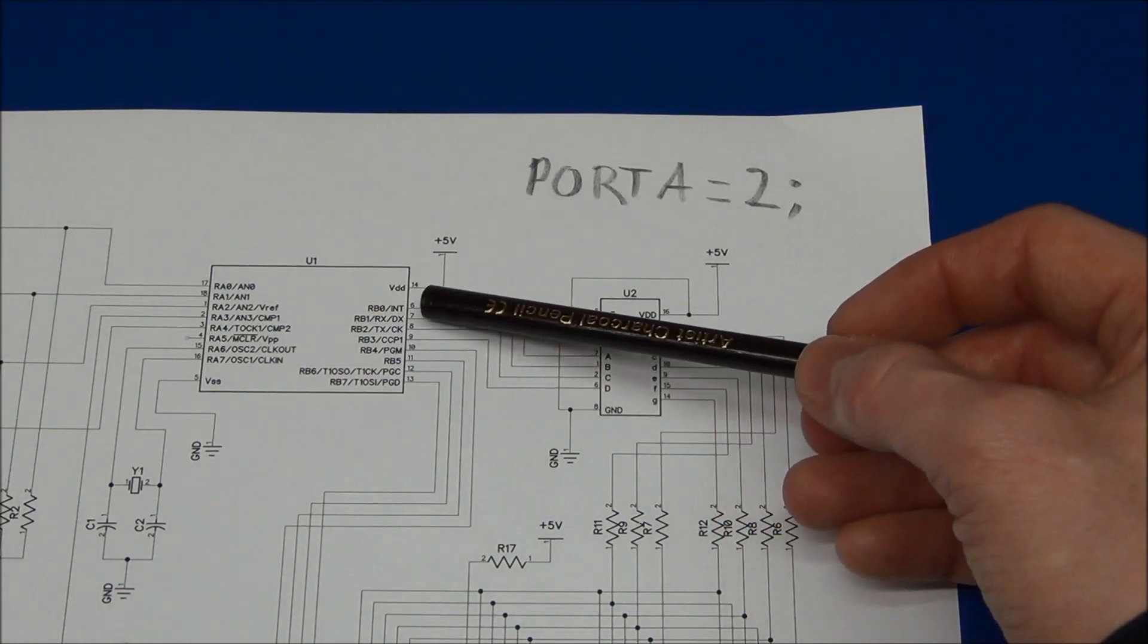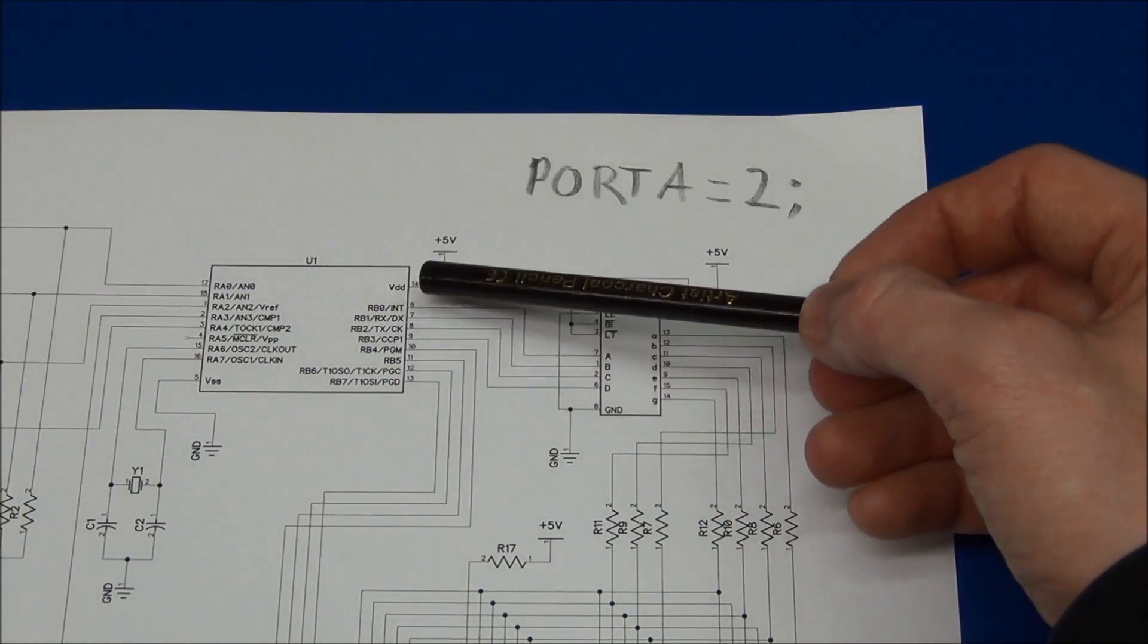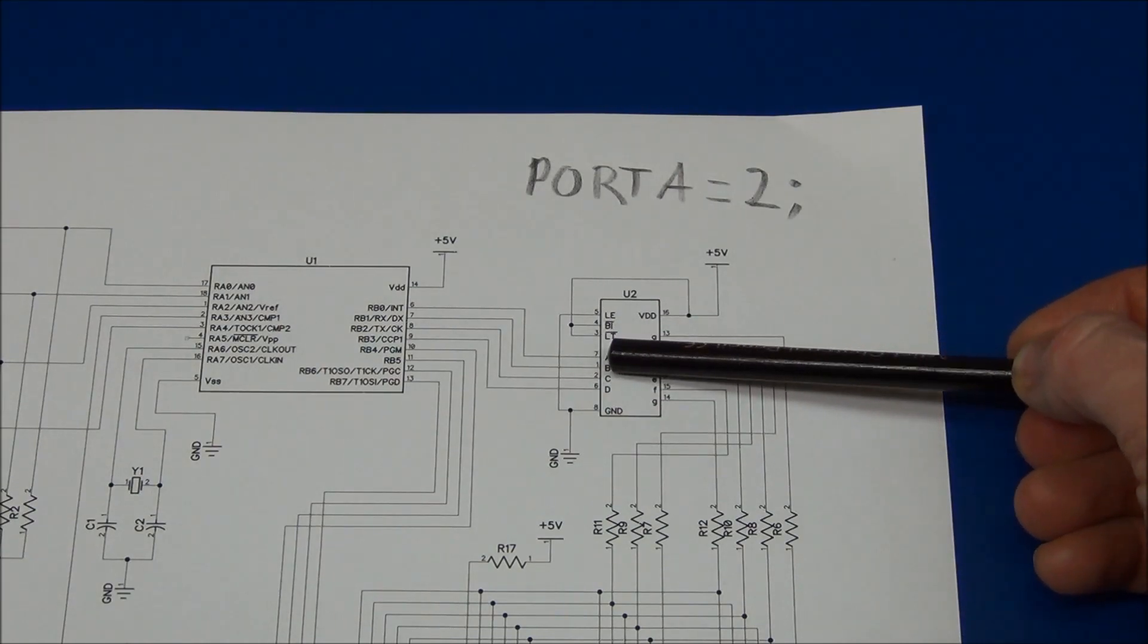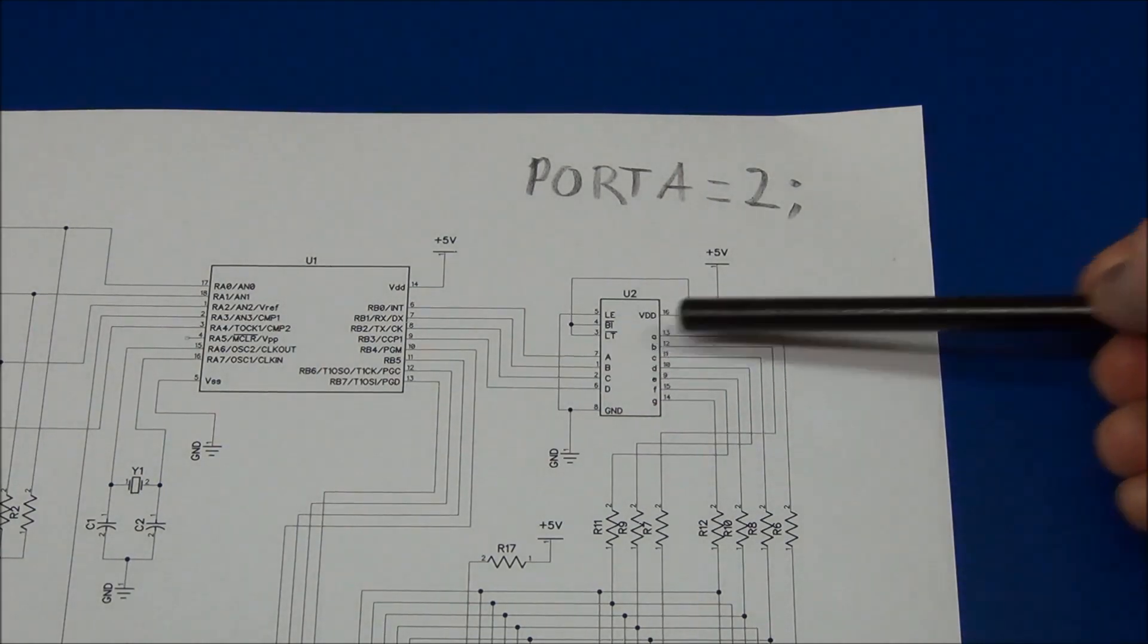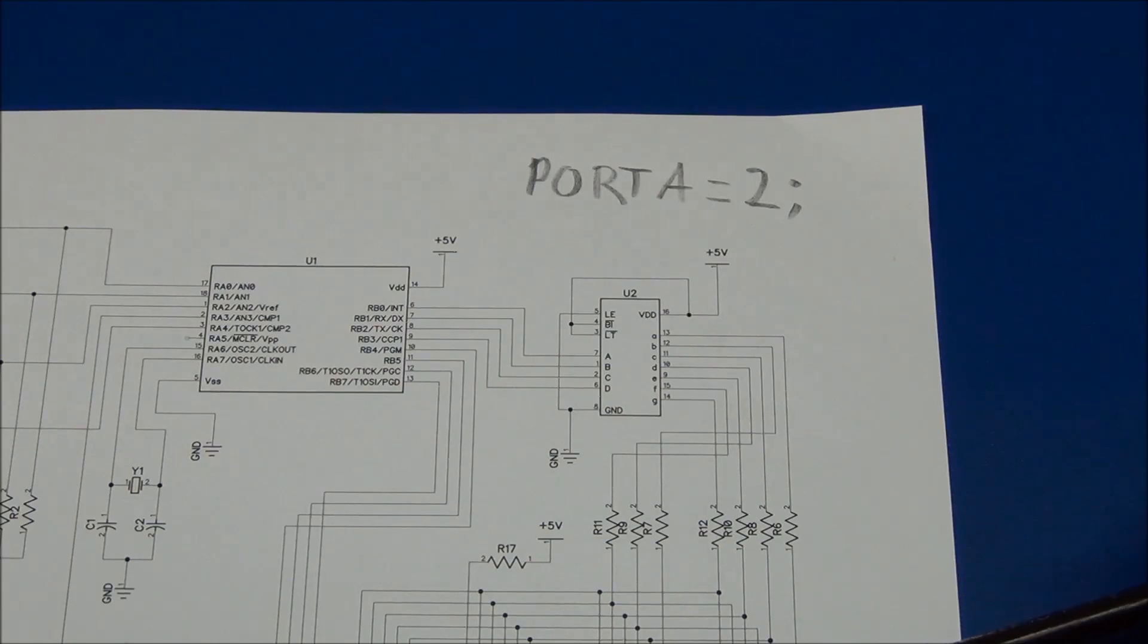The microcontroller will set a 2 on the output in binary, of course. That's exactly the input that this one needs. And it will set a 2 on the display down here.